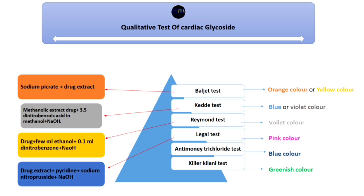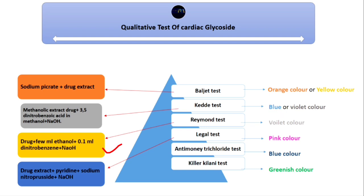In the Baljet test, we take the methanolic extract — drug plus 3,5-dinitrobenzoic acid in methanol plus NaOH — which shows a blue or violet color. In the Raymond test, we take drug extract plus few ml of ethanol plus 0.1 ml dinitrobenzene plus NaOH, which shows a violet color. In the Legal test, we take the drug extract plus pyridine plus sodium nitroprusside plus NaOH, which shows a pink color.